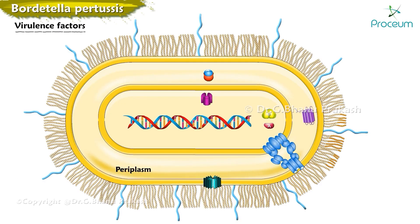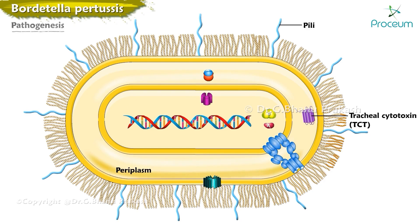Virulence factors of Bordetella pertussis include pili, tracheocytotoxin, and pertussis exotoxin A and B. Pertussis toxin is an AB5-type toxin composed of one catalytic subunit (the A subunit) and five membrane-binding or transport subunits (the B pentamer).